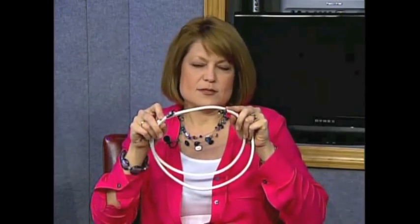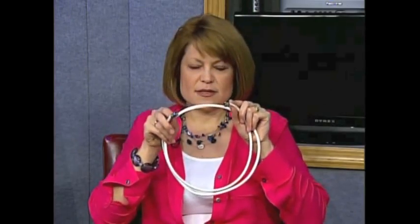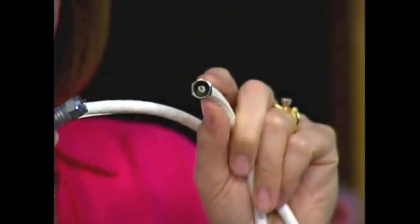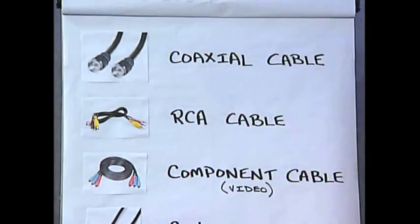On older televisions you might be running a coaxial cable from the television to a converter box. Coaxial cables come in all sorts of sizes, from the shortest three feet up to fifty feet or more, and can even be spliced together by buying additional converters. But that's our coaxial cable.